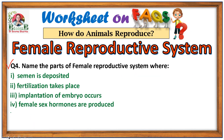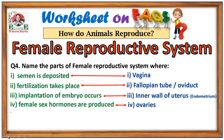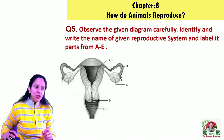Question number four: name the parts of the female reproductive system where — first, semen is deposited, answer: vagina; second, fertilization takes place, answer: fallopian tube or oviduct; third, implantation of embryo occurs, answer: the inner wall of the uterus, also called the endometrium; and fourth, female sex hormones are produced, answer: ovaries.